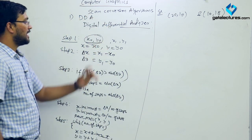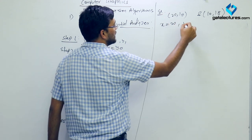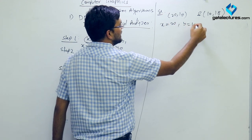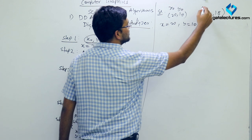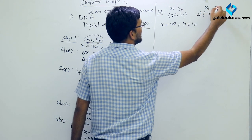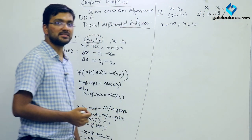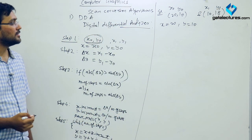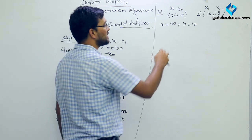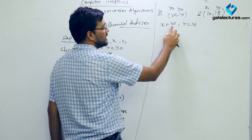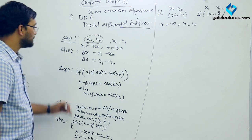Step 1: I have assigned X0 = 20 and Y0 = 10 as my initial point, and X1 = 10 and Y1 = 18 as my ending point. So my initial coordinates are X = 20 and Y = 10.